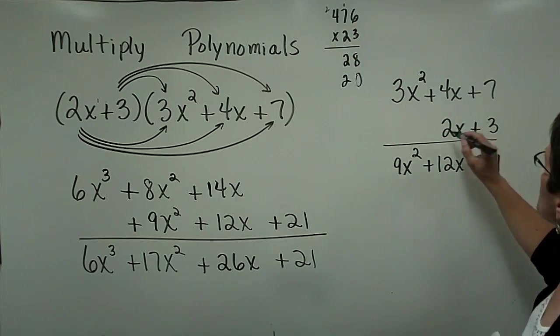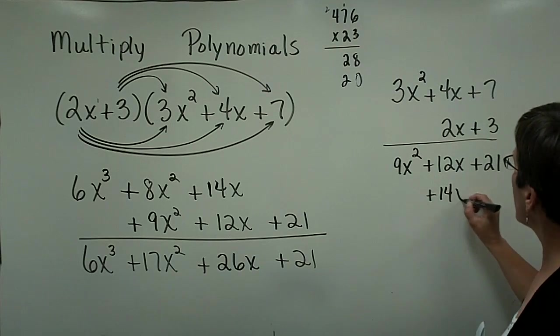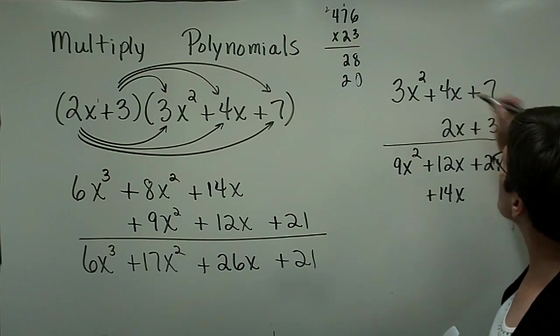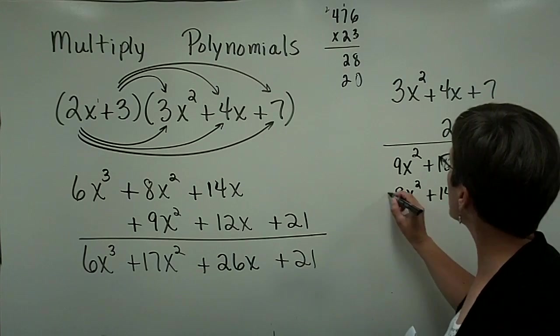2x times 7 is 14x. Not only do I locate it under its like term, but I have a 0 space here. 2x times 4x is 8x squared, and it's positive.